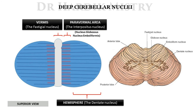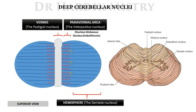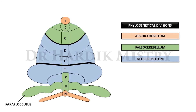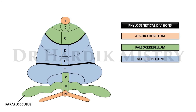The deep cerebellar nuclei are masses of gray matter embedded in the medullary core. The fastigial nucleus is present in the central part of the vermis. The interpositus nucleus — comprising nucleus globosus and nucleus emboliformis — is in the paravermal area. The dentate nucleus is present in the hemispheric part of the cerebellum.